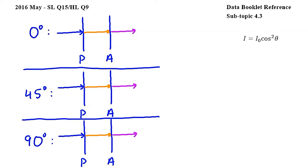Let's start by looking at what happens when theta is 0 degrees. In the diagram, we are looking at the polarizers from the side. Light of intensity I0 enters P. Since the light is horizontally polarized and the polarization axis of P is also horizontal, all of the light will pass through P. This means that the intensity of light emerging from P and entering A is also I0. We'll find the intensity of light emerging from A using the equation from subtopic 4.3, where I is the intensity of the light emerging from A, I0 is the intensity of the light entering A, and theta is the angle between the polarization axes of P and A. Note that theta in the formula and theta given in the diagram are not the same angles, even though both of them are represented by theta.